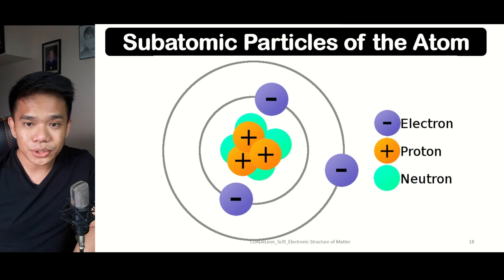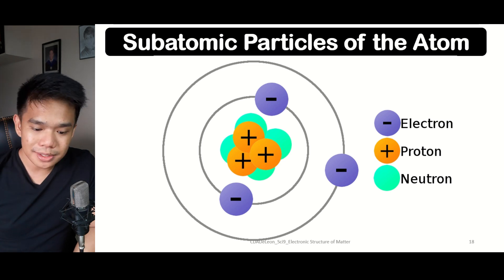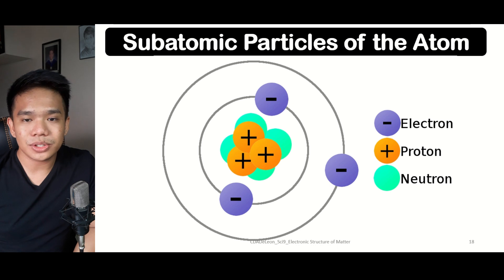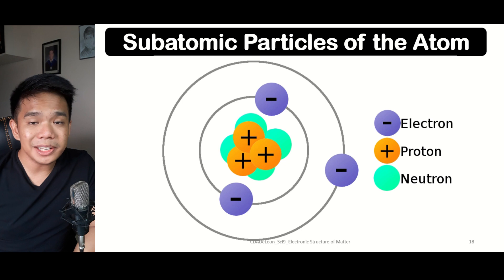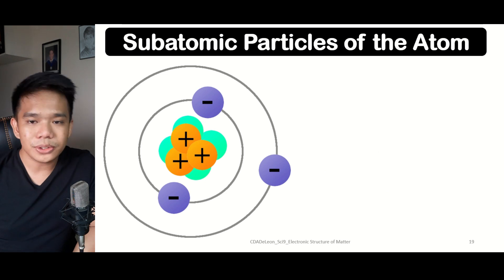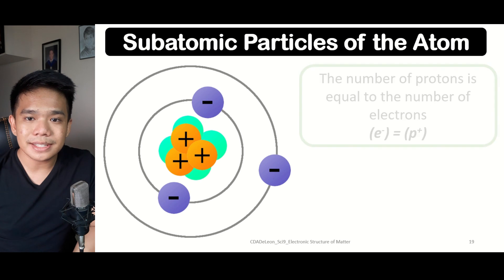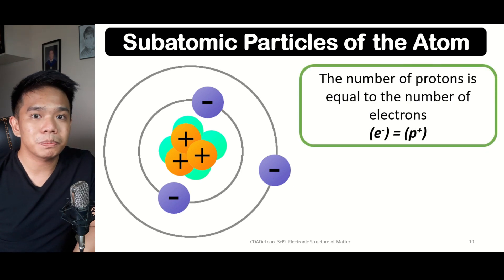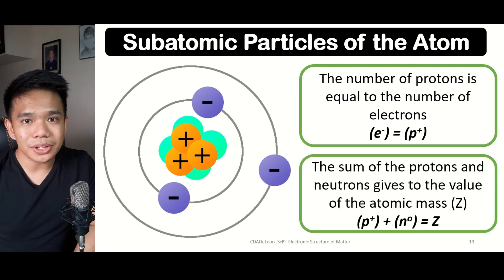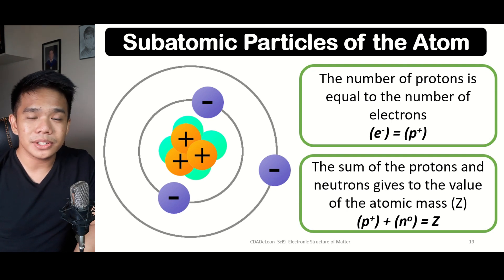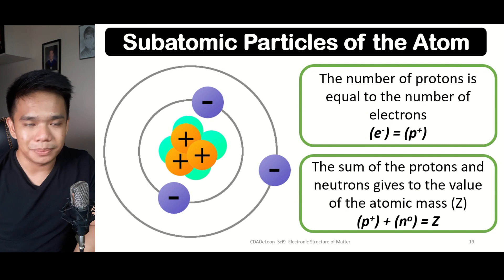The subatomic particles of the atom include the electrons (negatively charged), the protons (positively charged), and the neutrons (neutrally charged). Electrons freely move around the nucleus, which is comprised of both protons and neutrons. Regarding the number of subatomic particles: the number of electrons is the same as the number of protons, but only in neutrally charged atoms. Also, the sum of the protons and neutrons is equivalent to the atomic mass, which is considered the mass of the entire nucleus.